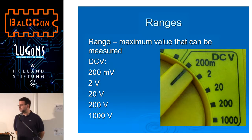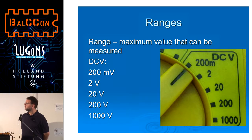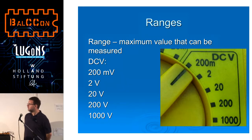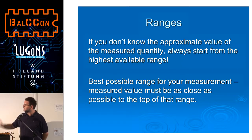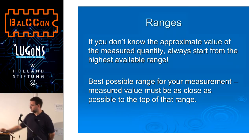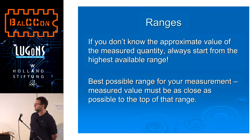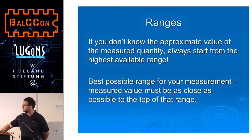First, we'll talk about something most useful to most of you: DC voltage. You have five different ranges — 200 millivolts, 2 volts, 20 volts, 200 volts, and 1000 volts. When you measure something and don't know how large the value is, always start from the highest range — in this case 1000 volts. If you are sure the value is in a specific region, you can start from there.